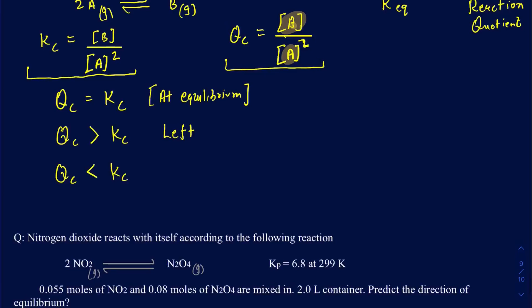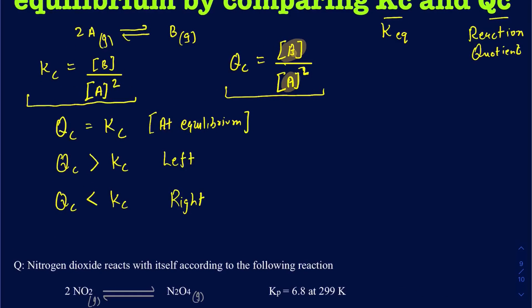That means you don't have enough products yet to get to equal the Kc. Since you don't have enough products, your reaction must shift to the right side so that you can make more products, and you can lose some of those reactants until your Qc becomes equal to the Kc. This is how you keep in mind under what conditions your reaction will shift to the left, and under what conditions it will shift to the right.